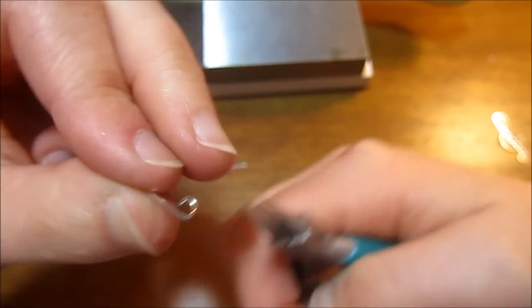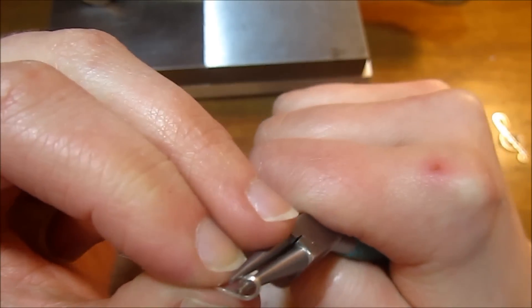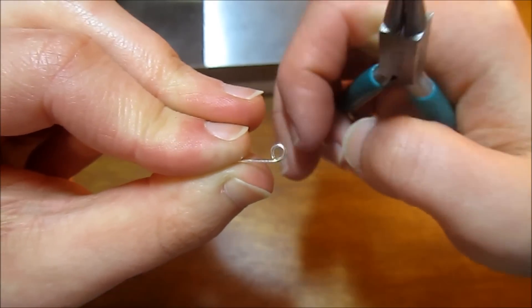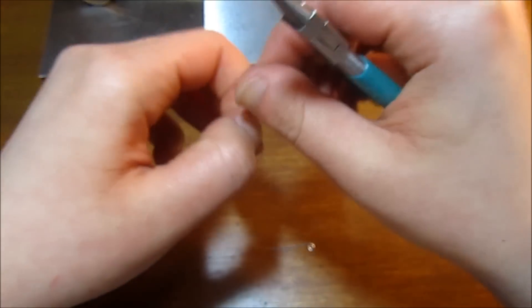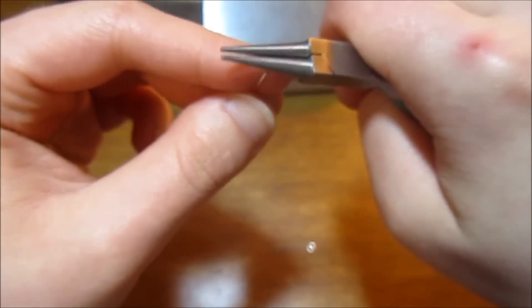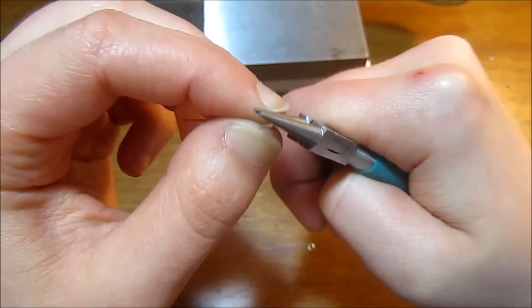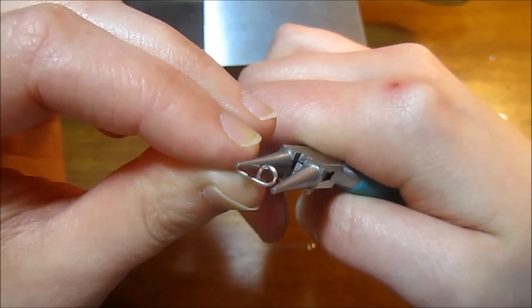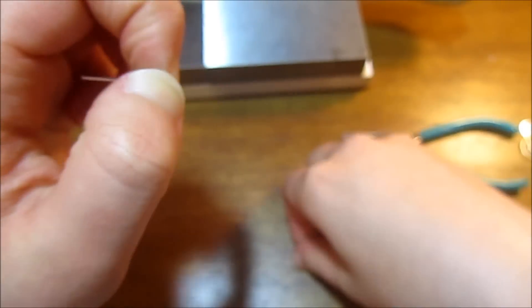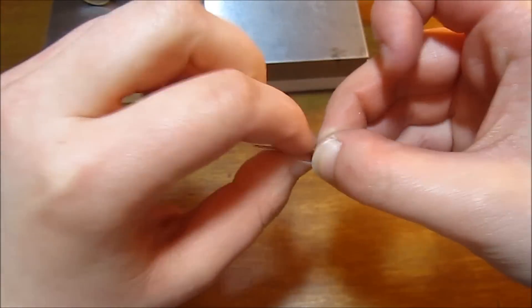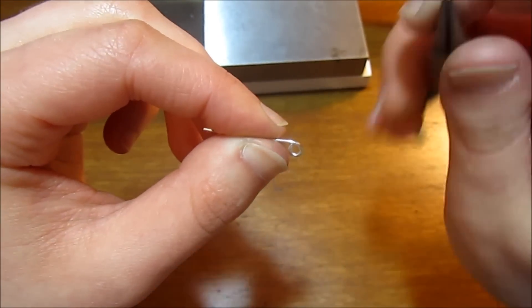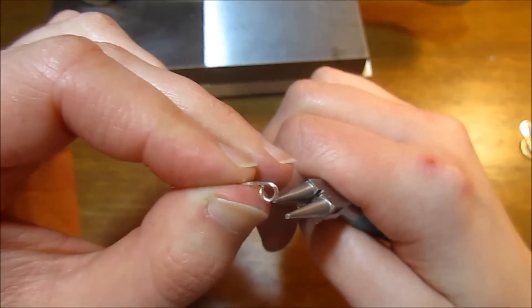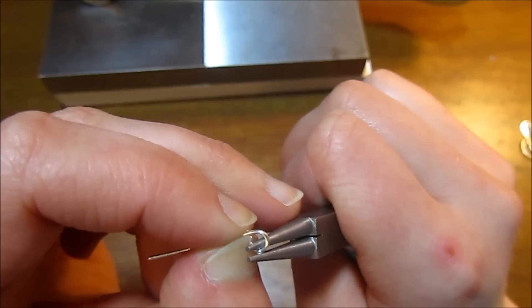This is going to be the loop that you use to attach the bail to your actual pendant. Let's do the other one while we're at it, so again just making a nice tight little loop. You want to make sure that they're both the same.